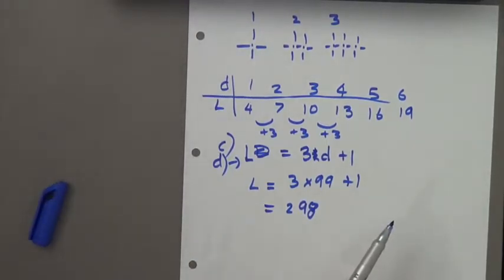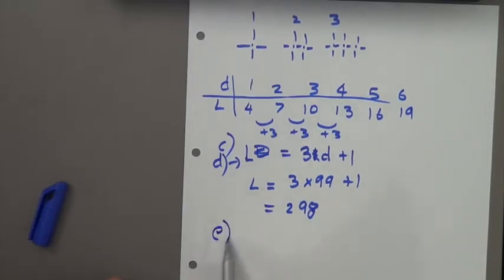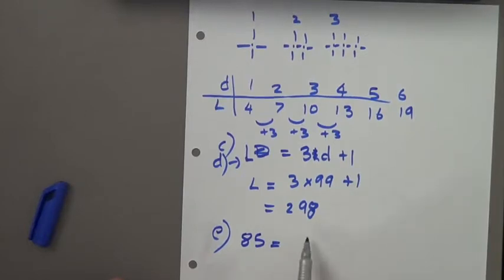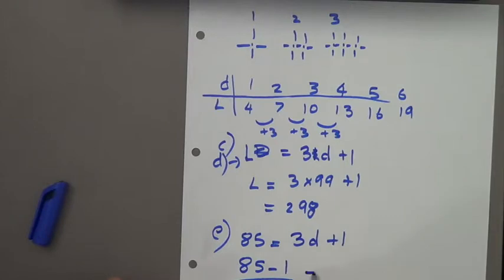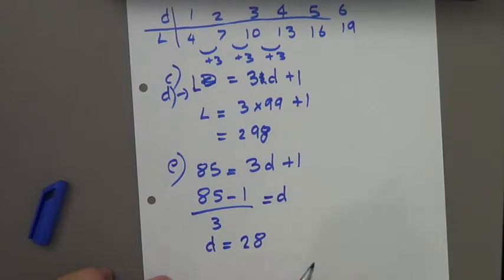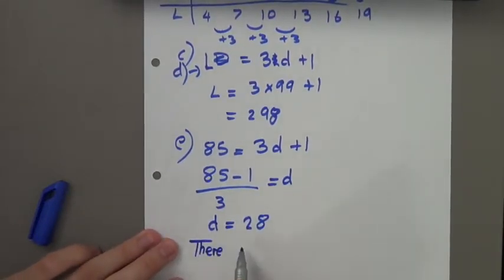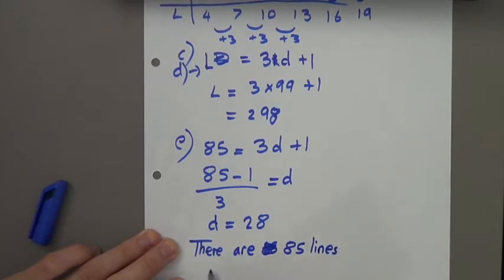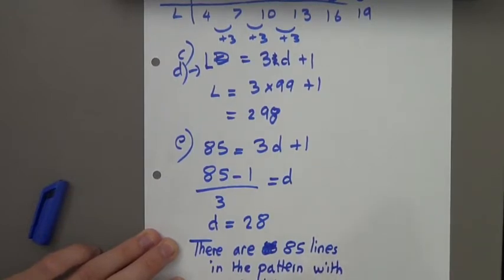Part E says: complete the following statement — there are 85 lines in the pattern with how many dots? We substitute 85 for L and find D. So 85 minus 1 divided by 3 gives us D, which equals 28. Therefore, there are 85 lines in the pattern with 28 dots.